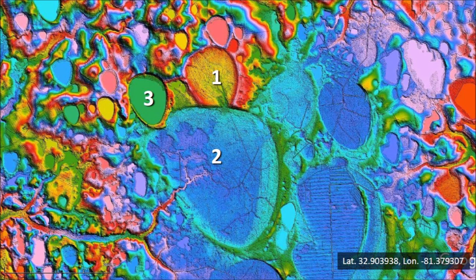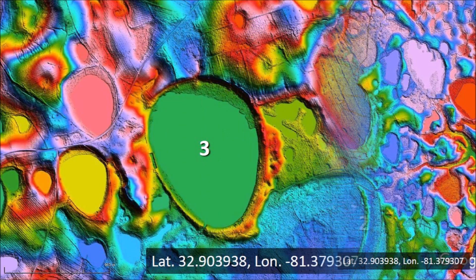We will now look at bay number 3 in more detail. This is a closer look at these three bays, and we can see that bay number 1 drains into bay number 2, which is at the lower elevation. There is a fringe of alluvial deposits within bay 2 at the point where it intersects bay number 1.